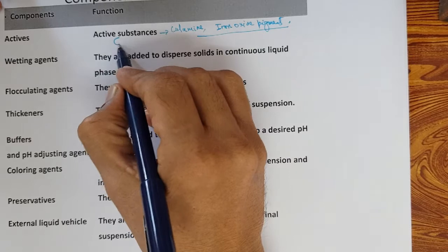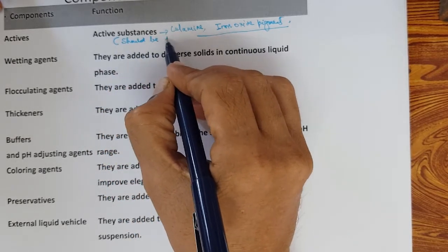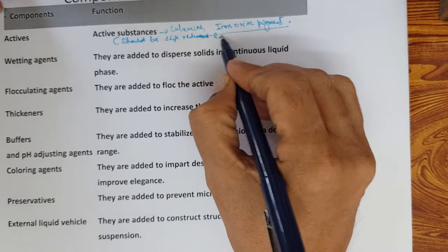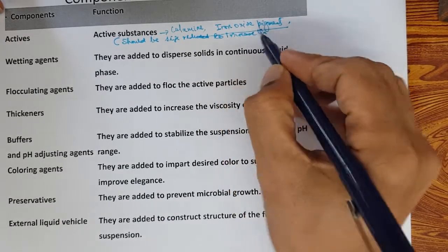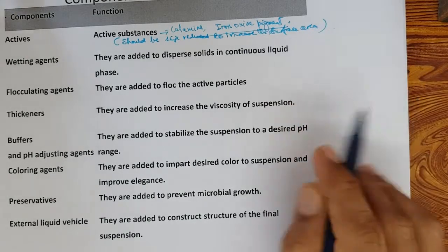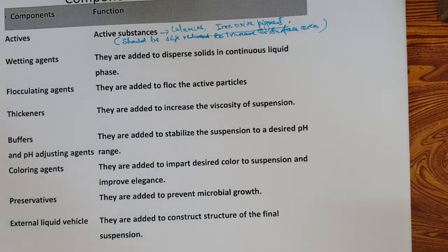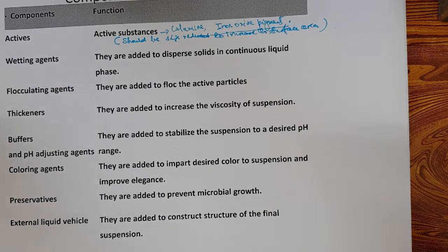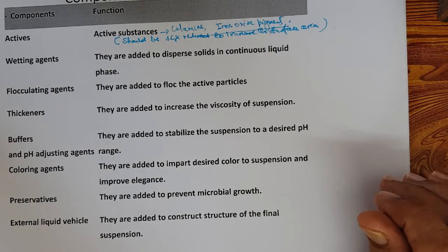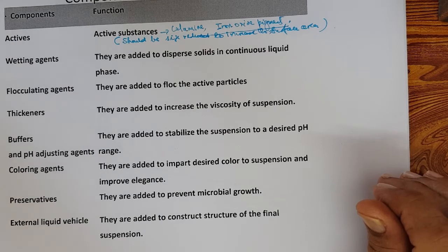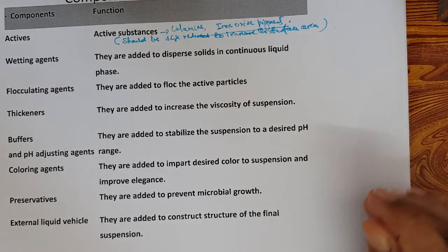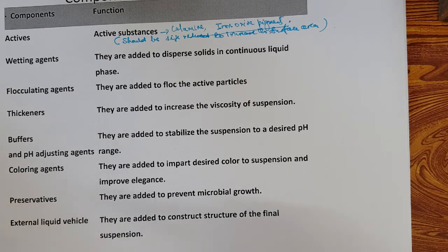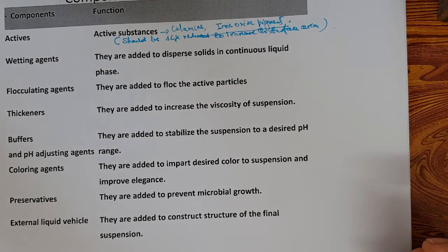The active substances should be size-reduced to increase the surface area. Now, wetting agents: most of these particles are hydrophobic and to disperse them in water effectively, the particles first have to be wetted with water. Some hydrophilic colloids are first wetted with glycerin and then added to water. Fine particles are usually surrounded by air globules, which affects the wetting of these particles.